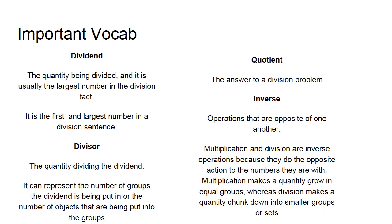Following is the quotient, which is the answer to a division problem. And finally, the word inverse. So if we're putting it in terms of operations, we're talking about operations that are opposite of one another. Multiplication and division are inverse because they do the opposite action to the numbers that they are with. Multiplication grows a quantity in equal groups, whereas division chunks down a quantity into smaller groups or sets.